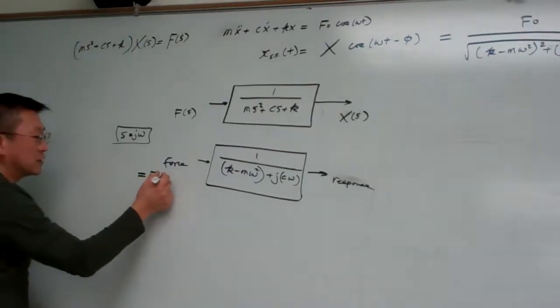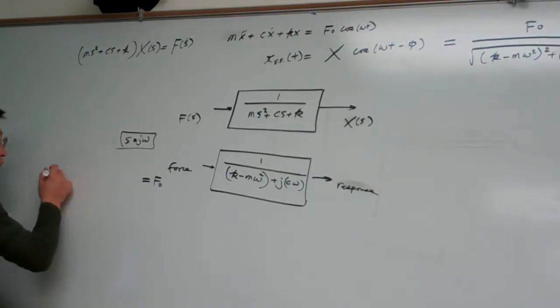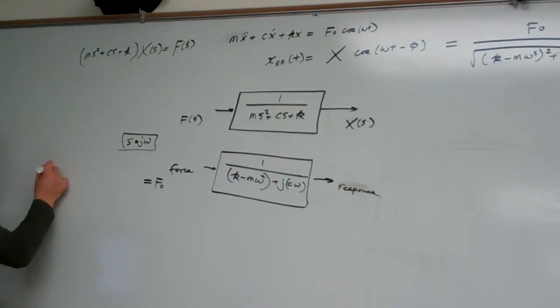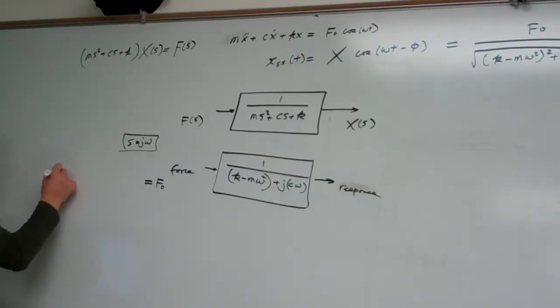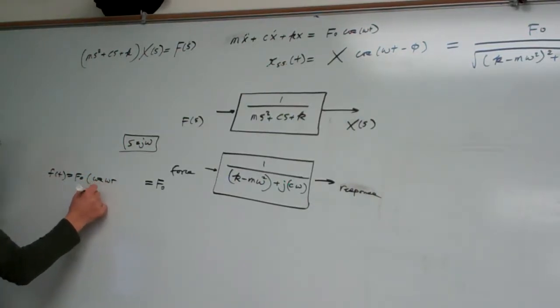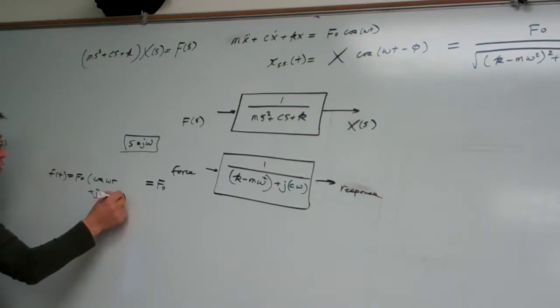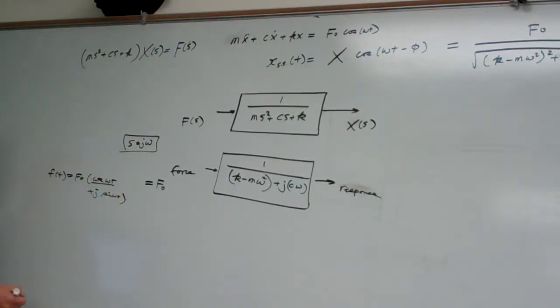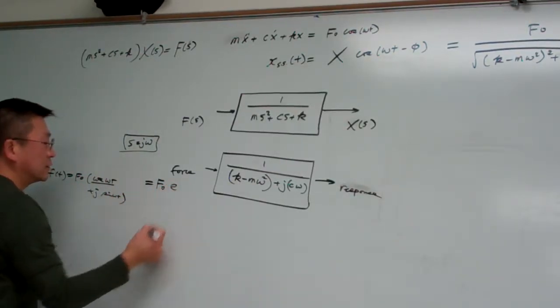So here this is the real part here. So you know for our force, say in general, the force will be equal to f zero cosine omega t plus j sine omega t. So this is the real part, so that is e to the...